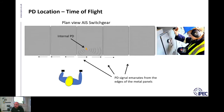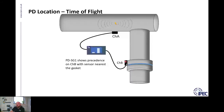A note on time of flight on GIS: although channel A may be physically closer to the PD, the PD can only escape through gaskets or cable terminations. You need to consider that the PD may have traveled quite a long way before coming out. In this example, time of flight would say channel B detected the PD first — but bear in mind the PD can come from anywhere within the GIS that finds that exit point nearest. Caution must be taken when using time of flight on GIS.